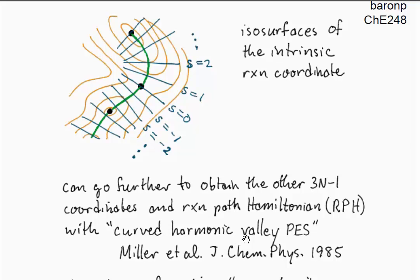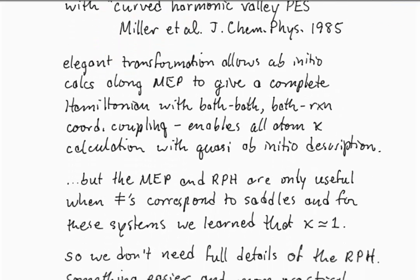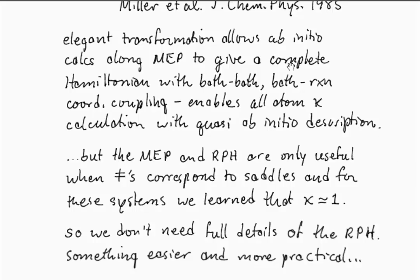It's based on this curved harmonic valley potential energy surface idea. It has many wonderful characteristics. It's, of course, a really elegant mathematical framework. And in principle, it allows you to use ab initio calculations along the minimum energy pathway to give a complete Hamiltonian that includes bath-bath coupling and bath-reaction coordinate coupling, and therefore allows you to run the full molecular dynamic trajectories to do things like compute transmission coefficients based on a quasi-ab initio description of all those degrees of freedom.